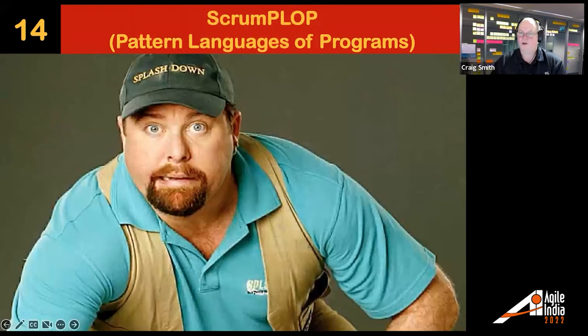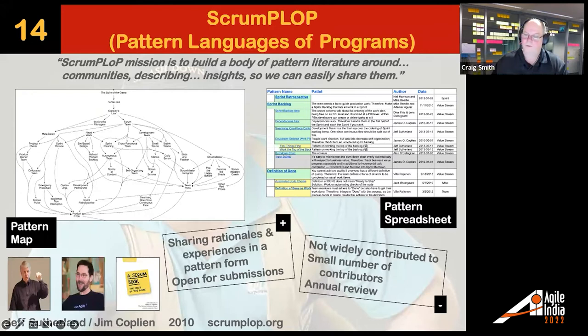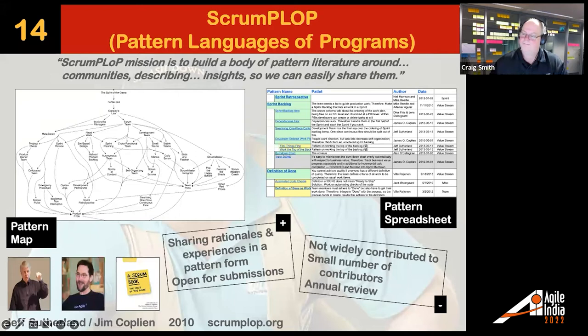ScrumPLoP — Scrum Patterns Language of Programs — is something you might not have come across. Software development is all about patterns, and people have done work to get the patterns out of Scrum. From 2010, Jeff Sutherland and Jim Coplien built this out and wrote a book about it. You can go to scrumplop.org to see all the patterns. Since the pandemic it's dropped off a little, but there are lots of really good patterns in there worth looking at.